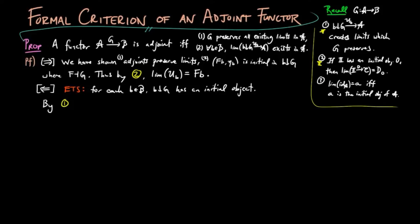By 1 on the right and the hypotheses 1 and 2 above, UB creates the limit of the identity on the category B over G, and thus the limit of UB is equal to UB on the limit of the identity.